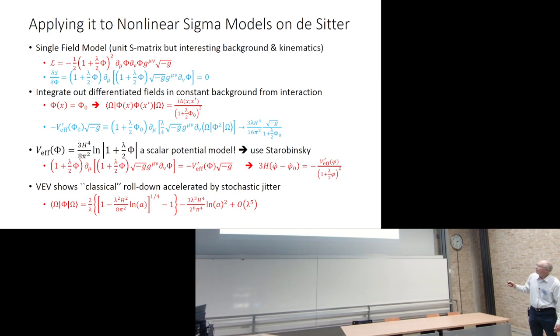In order to understand this, we applied it not to gravity but to something which also has derivative interactions, namely nonlinear sigma models. Here's a nonlinear sigma model, standard scalar free field kinetic operator and then modified by a function of the fields. This thing has exactly the same kind of derivative interactions as gravity and exactly the same kind of large logarithms get induced as gravity and exactly the same orders. But it's much simpler to study because it doesn't have the gauge issue. It doesn't have all the indices.